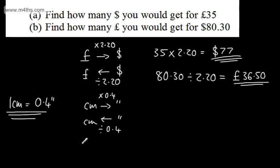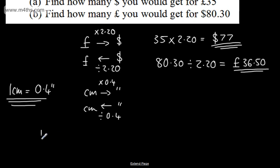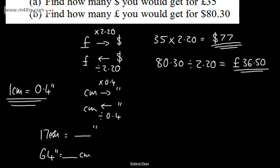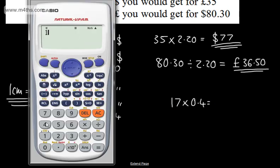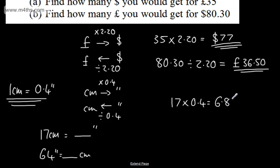So let's go ahead and do a couple of questions. Let's say I've got 17 centimetres and I want to find out how many inches that is. Going from centimetres to inches, it'll be 17 multiplied by 0.4. In the calculator, 17 multiplied by 0.4 gives us 6.8. So 6.8 inches — we can see it's going to get smaller.